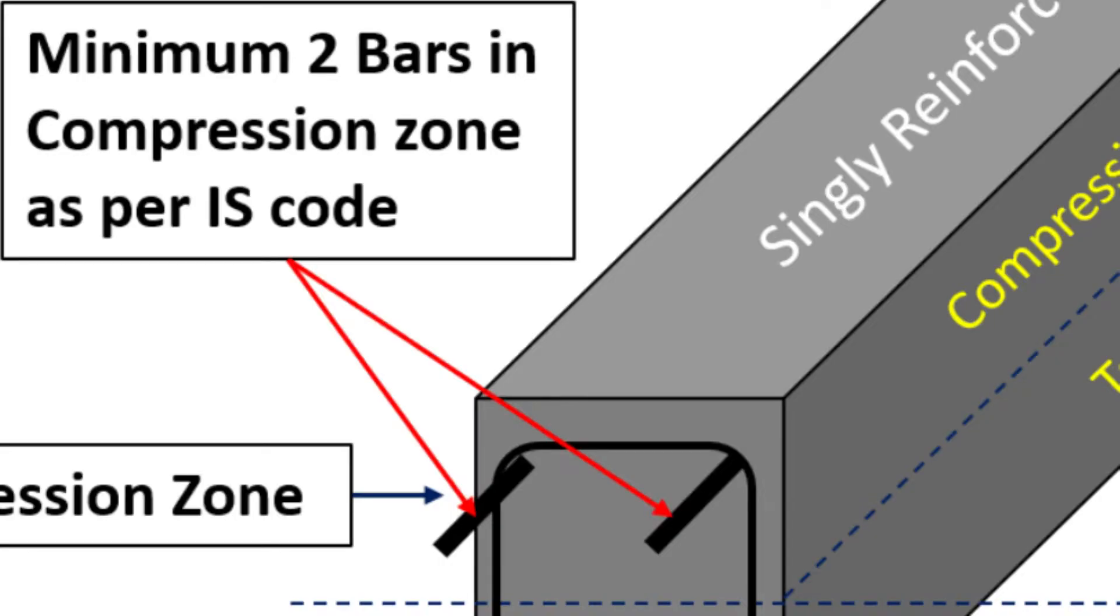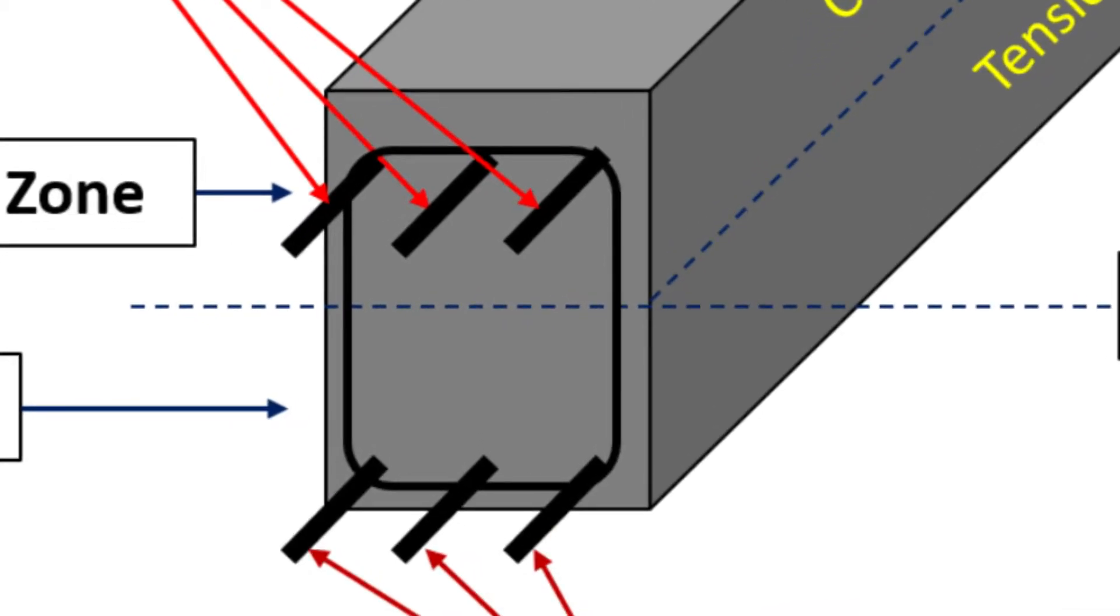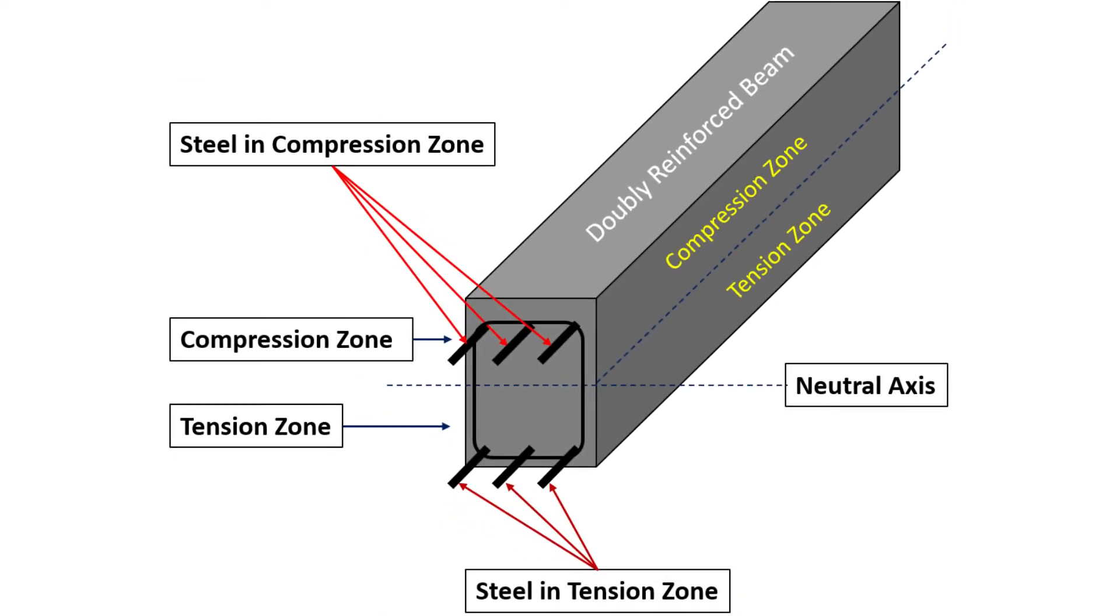On the other hand, a doubly reinforced beam has steel reinforcement in both the tension and compression zones. This type of beam is used in situations where the load on the beam is greater and the concrete alone is not strong enough to handle the compression forces.